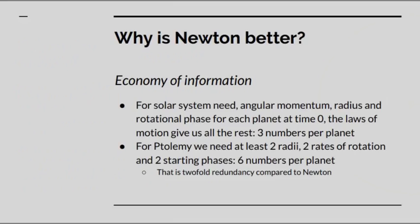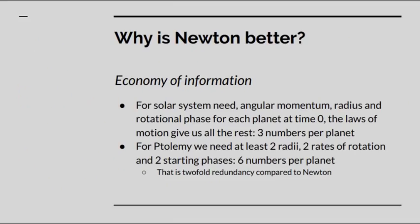So why is Newton's and Kepler's theory better? Basically it's down to economy of information. For the solar system as a whole, all we need is the angular momentum, radius and rotational phase for each planet at time zero, and the laws of motion give us all the rest. That's three numbers per planet.